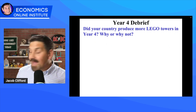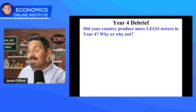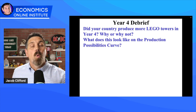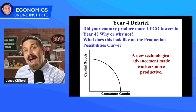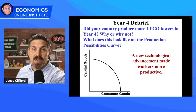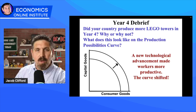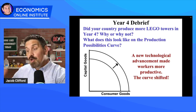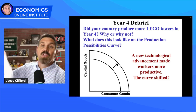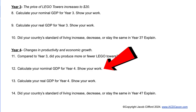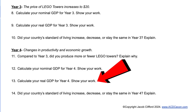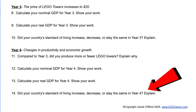In the Year 4 debrief: did your country produce more Lego towers in Year 4 compared to Year 3, and why? They probably produced more because they now have new machinery — new capital equipment, new physical capital that allows them to do things they couldn't before. Their productivity increased. Connect that back to the production possibilities curve. The entire curve now shifted — we had new machines and factories that allowed them to produce more stuff. Students calculate their nominal GDP, real GDP, and explain what happened to their standard of living.